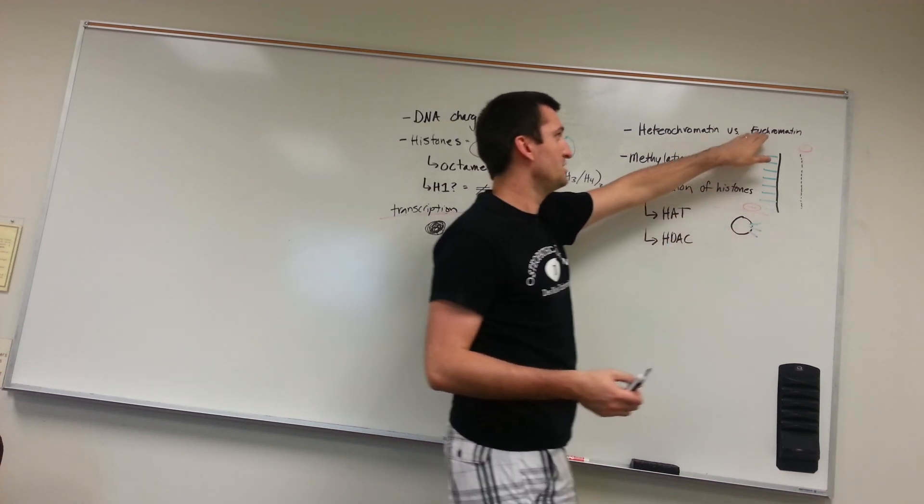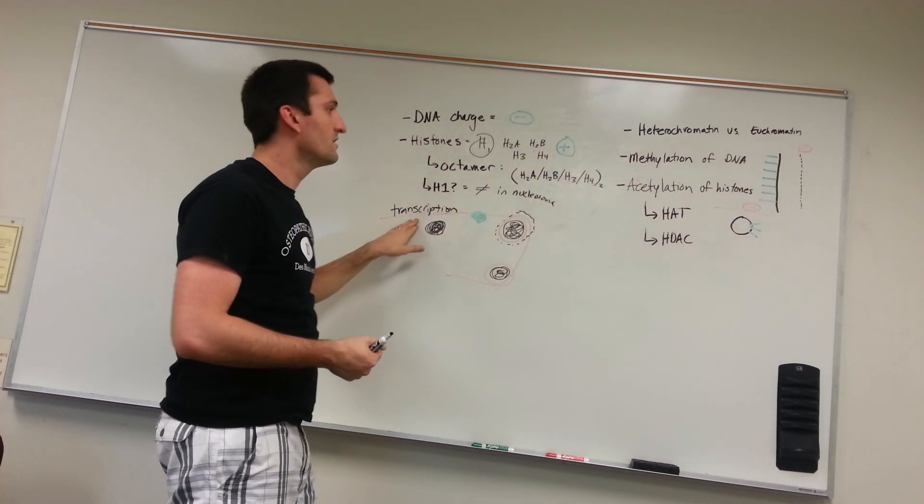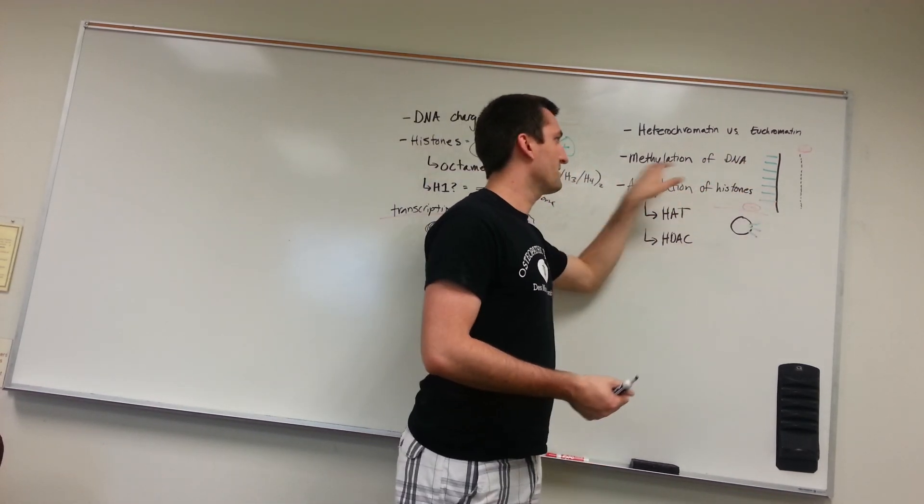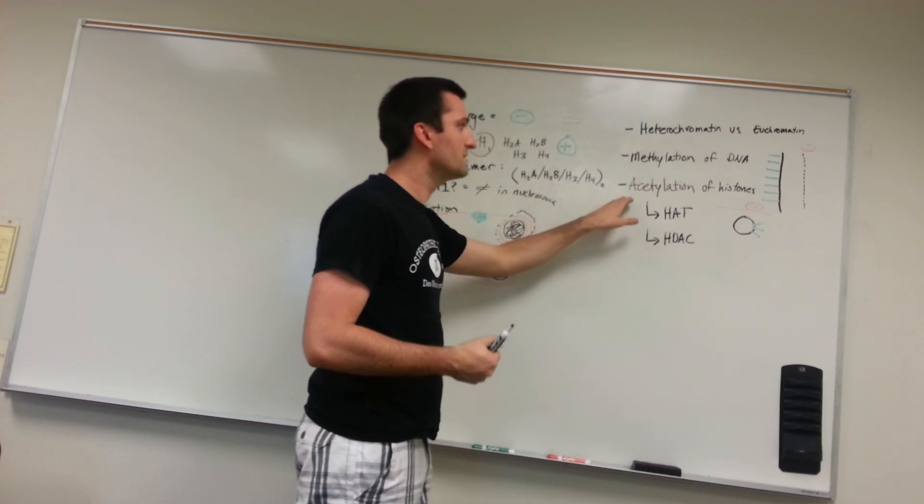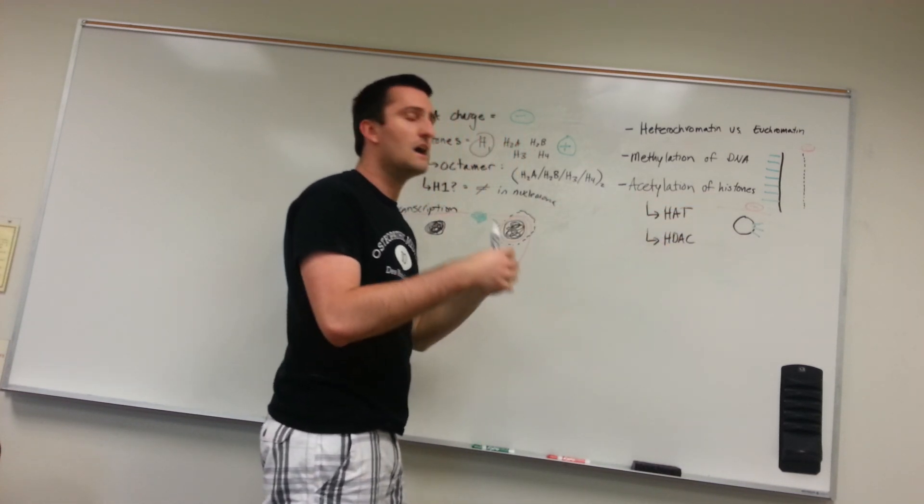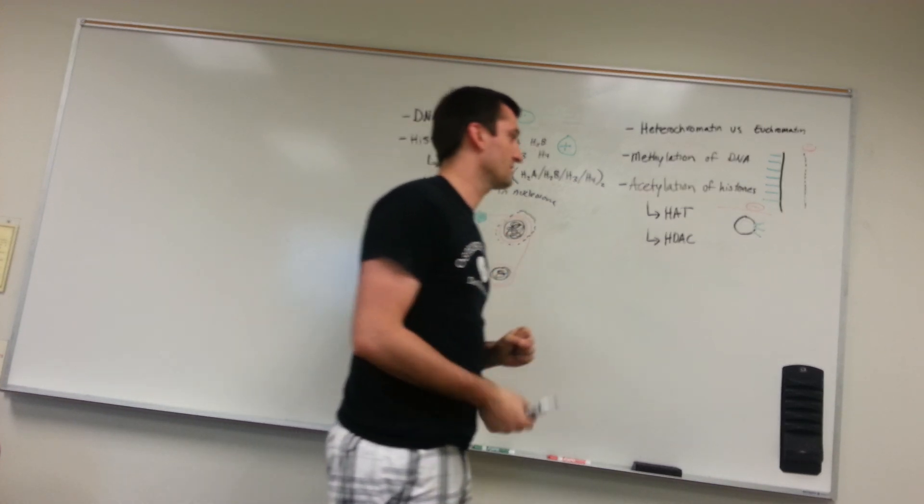So what's going to happen? We're going to have dissociation of the DNA from histones. Dissociation leads to euchromatin. Euchromatin is transcriptionally active. Transcriptionally active, we're going to have methylation and synthesize new DNA. Acetylation of histones causes unwinding, uncoupling of the DNA to the histone transcriptionally active.